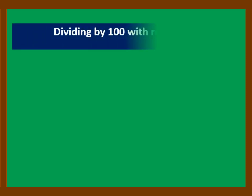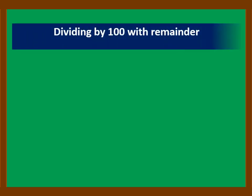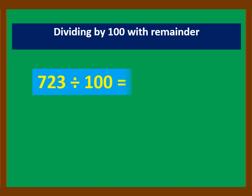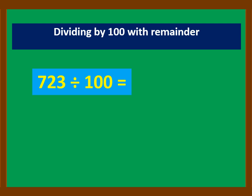In dividing by 100 with remainder, let's answer this example: 723 divided by 100. The last two digits of the number are the remainder, and the remaining digit, 7, is the quotient.